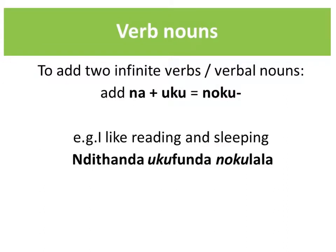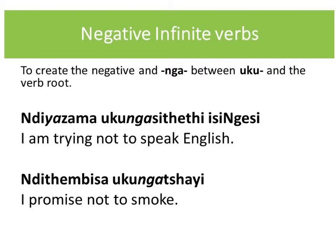Because two infinitive verbs can be used as verbal nouns, they can also be linked together with 'na', which means 'and'. If you put 'na' plus 'oku' you get 'noku', so 'noku' means 'and' when used with nouns. For example, 'I like reading and sleeping' would be 'nditanda ukufunda nokul ala', where 'na' indicates the 'and' in the sentence.